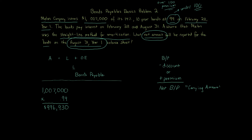We're using the straight-line method. We calculated the bond carrying amount at issuance for Mellon as $996,930, but now we need it for August 31st, year 1 — after six months. We still use the face amount, $1,007,000, as the bonds payable figure. Remember: we always subtract a discount or add a premium. The amortization calculation is the same whether it's a discount or a premium — you just add instead of subtract for a premium.